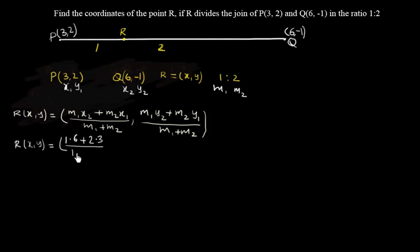Comma, next m1 is 1 into y2 is -1, plus m2, 2 into y1 is 2, by 1 + 2. So let's say R(x,y) equals to 1 into 6 is 6, plus 2·3 is 6.